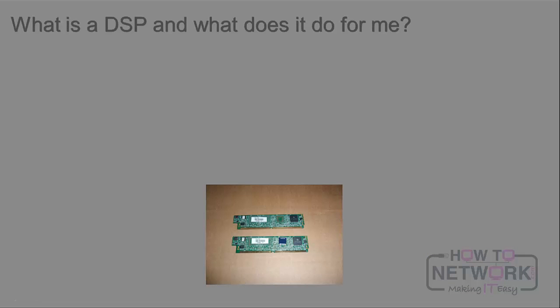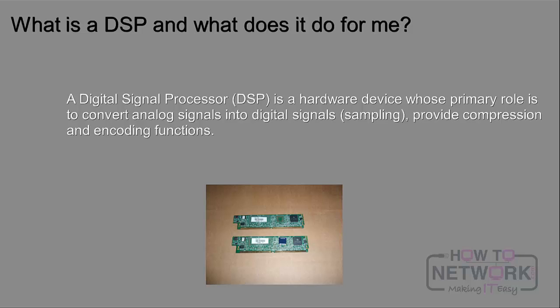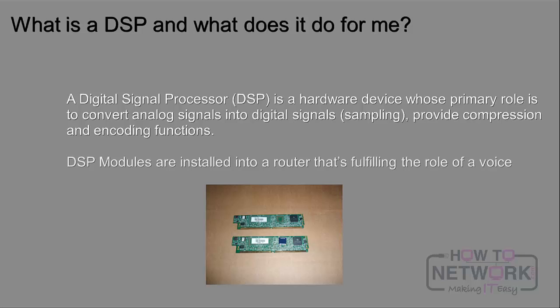The modules you see on the screen here are DSPs — Digital Signal Processors. A DSP is a hardware device whose primary role is to convert analog signals into digital signals, to do that sampling we talked about with Nyquist's theorem, and provide compression and encoding functions. These DSPs are essentially the A-to-D and D-to-A converters in your router, taking care of turning voice into packets.